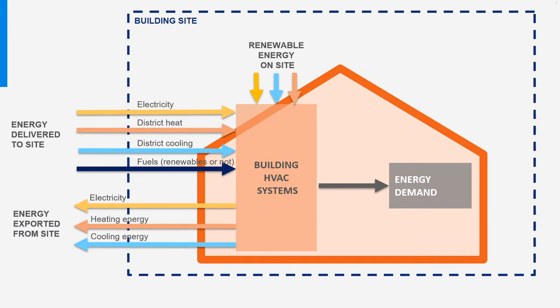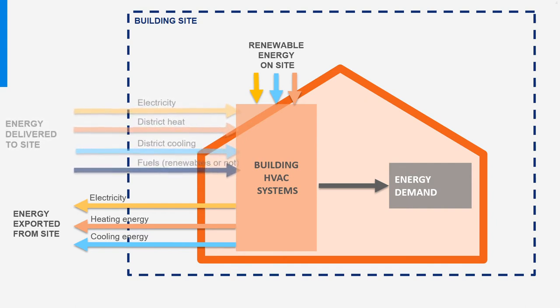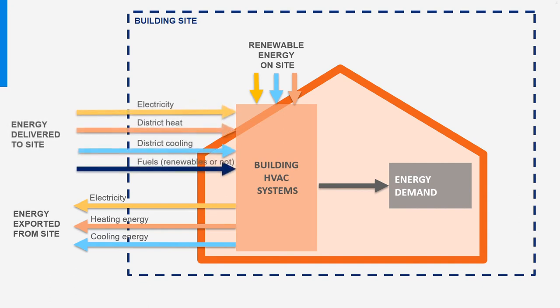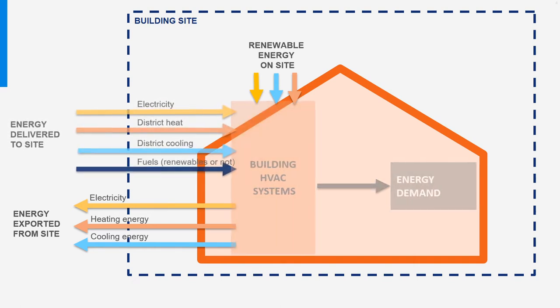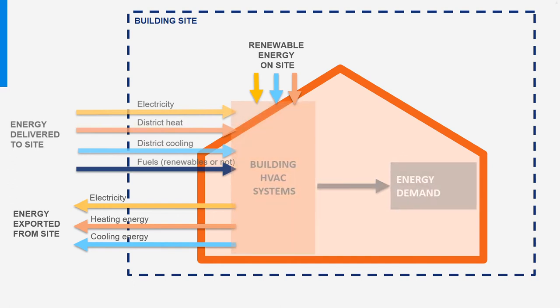Let's take a closer look at the building or building site level. The building could be a house, an office building, a school, a data center, or any type of building. On the right we see the energy demand, which is determined by the wish to maintain a certain temperature and by construction characteristics like insulation. On the left we see the energy delivered to the site. The HVAC systems distribute electricity, heat, and cold inside the building, and can also produce these based on incoming fuels — think for instance of a home gas boiler.